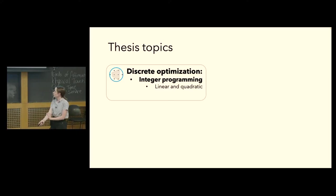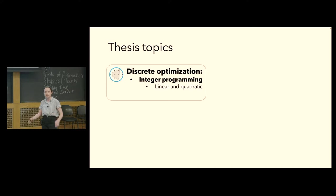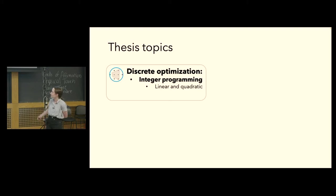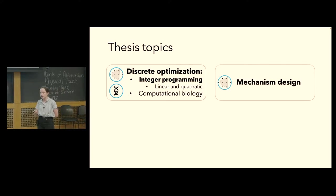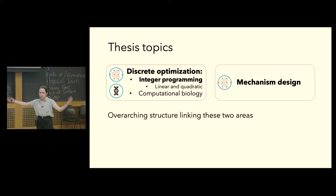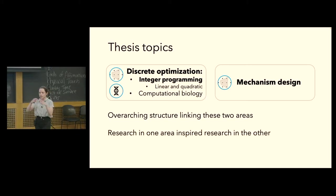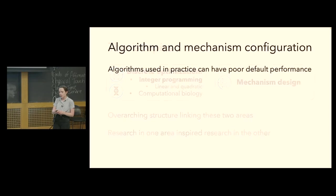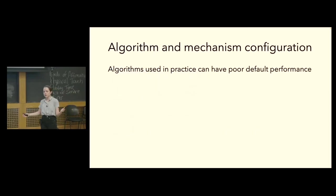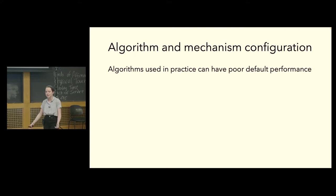I'm going to give an overview of my thesis. The main topics were discrete optimization and in particular integer programming, both linear and quadratic, as well as computational biology — though I'm not going to talk so much about comp bio in this talk. The other main topic was mechanism design. I'm going to describe the overarching structure linking these two different areas, and describe how research in integer programming inspired research in mechanism design and vice versa. The linking thread between these two areas is automated algorithm and mechanism configuration.